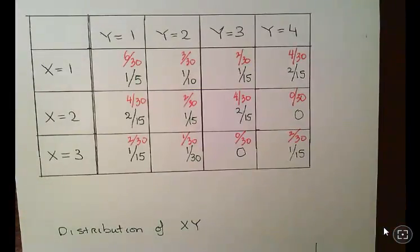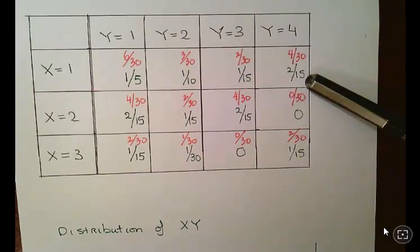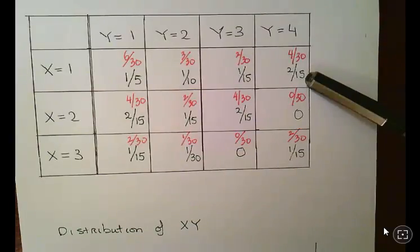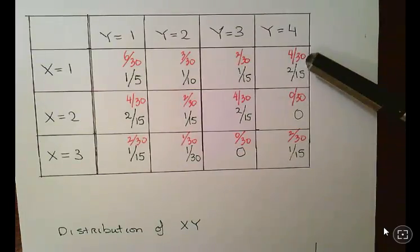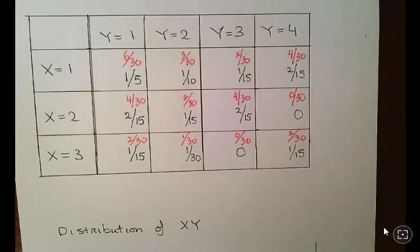I've set out the table again. Those are the probabilities there. I originally wrote them in the bottom corner to simplify them as much as I can, but I realized that's a bad idea. So everything is now in terms of the probabilities with the common denominator of 30.